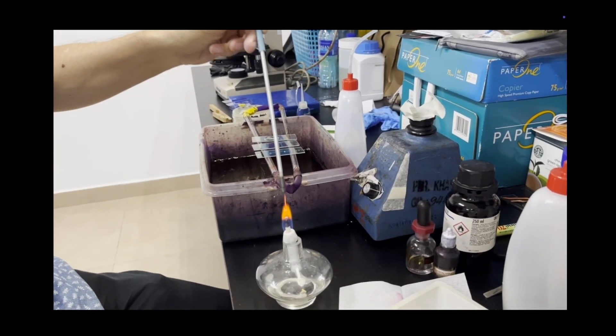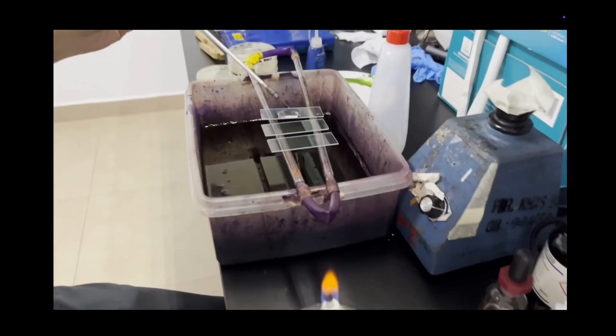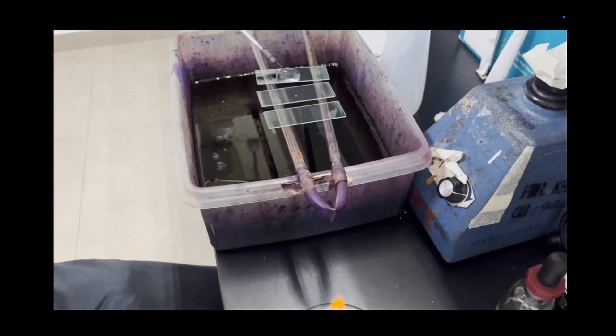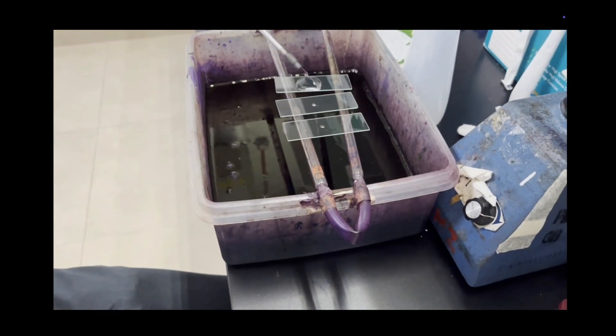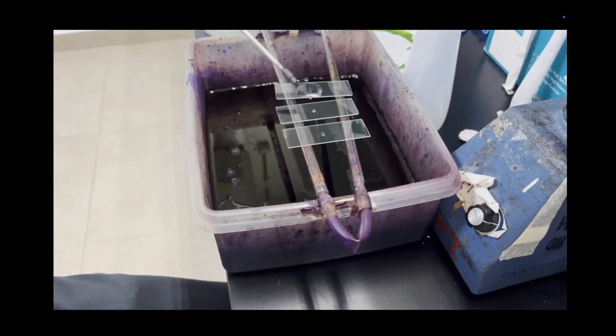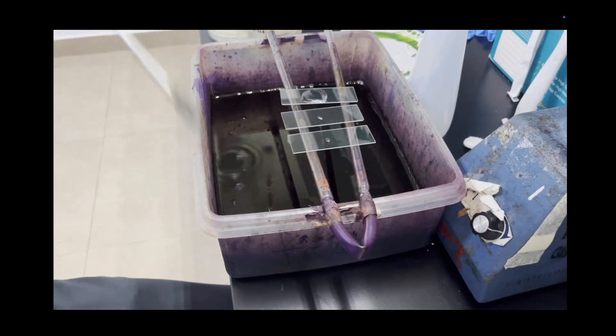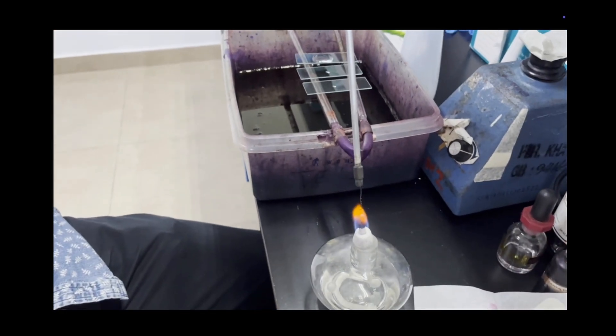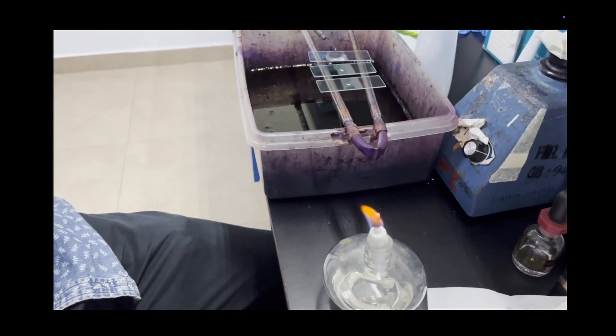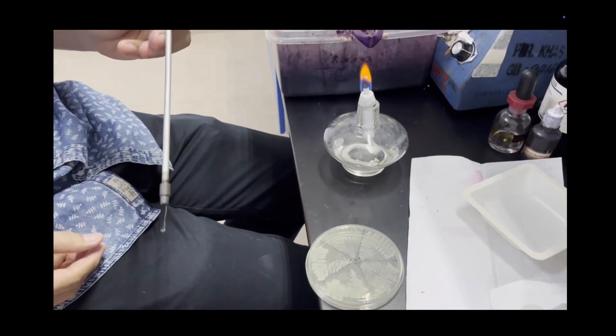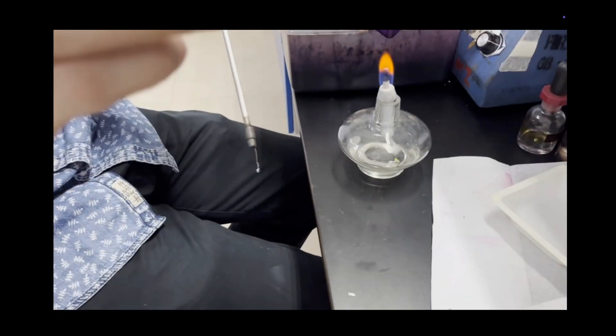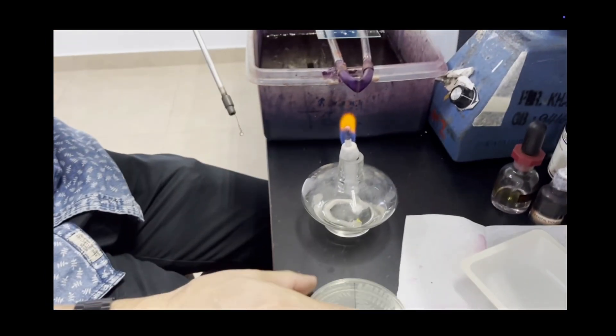For this flagellar staining we'll be using the Ryu stain method. First we place some sterile water onto clean fresh slides, and then we can use a loop with a bit of water in it.